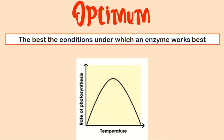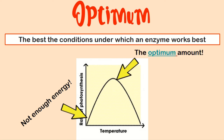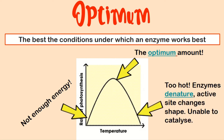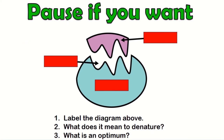Looking at the graph: temperature is along the bottom and rate of photosynthesis is on the vertical axis. At low temperatures, enzymes don't have much energy so the rate is low. At the optimum temperature the rate is at its maximum. Beyond that, even though temperature keeps rising, the rate suddenly drops because the active sites have changed shape due to overheating, so they can no longer accept substrates.